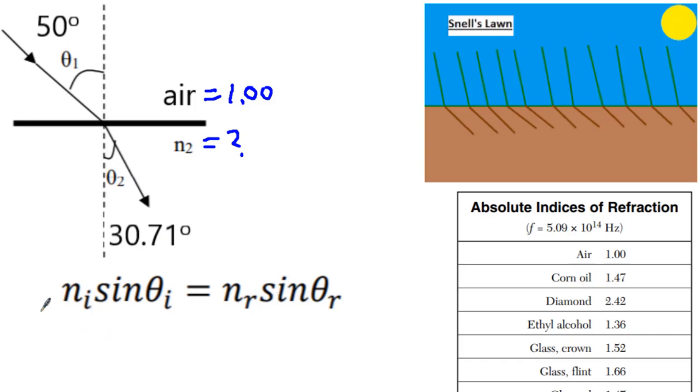So remember we always write our equation, we substitute what is NI, that's 1.00 because it's air. Sine of theta I, remember it's coming in at 50 degrees. You've got to stay consistent, which means everything on this top side is going to go on one side of the equation. On the second side of the equation we have NR, sine of 30.71 degrees.